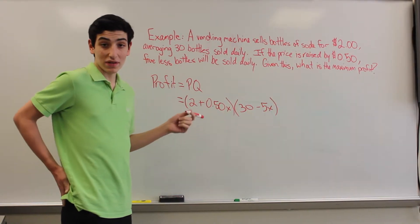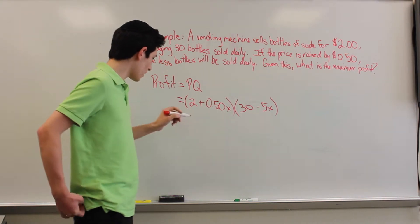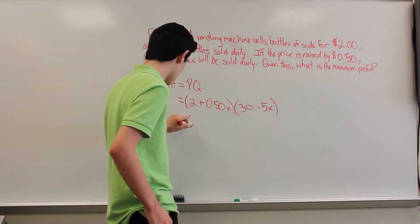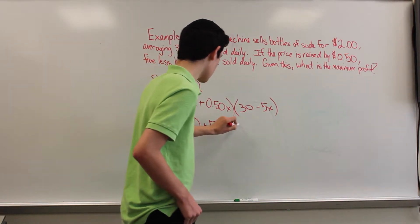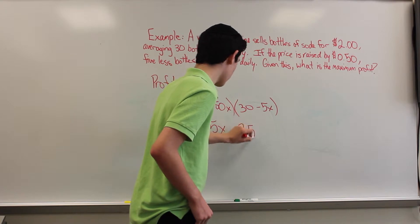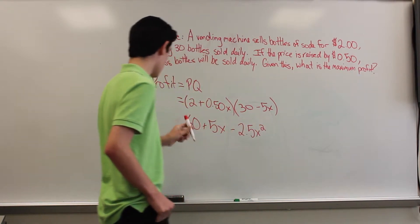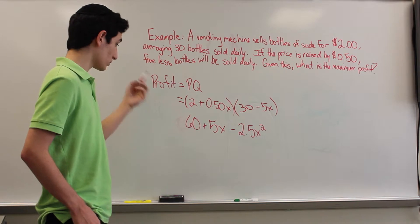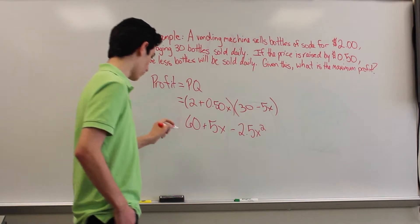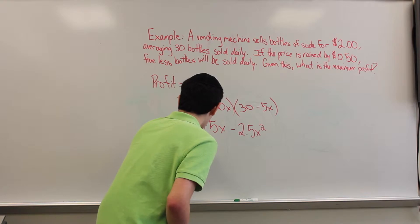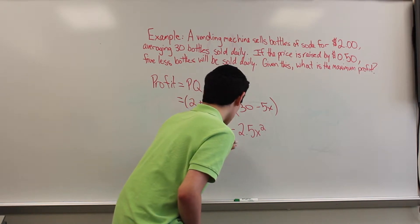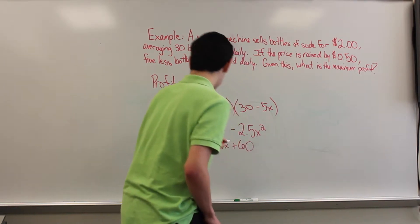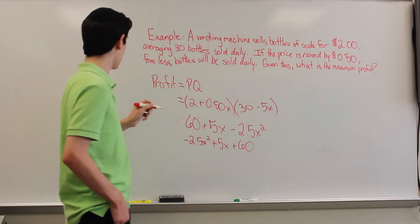So if we multiply this through, i.e. foil it, then what we're going to get is 60 plus 5x minus 2.5x squared. So why don't we write that in standard form? So negative 2.5x squared plus 5x plus 60. So now if we use our vertex formula.